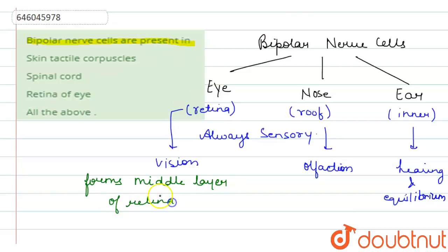For nose, it is found in the olfactory mucosa, and over there they serve as the receptors.